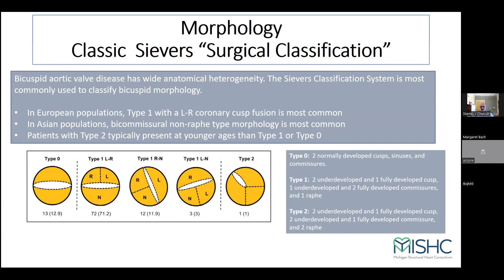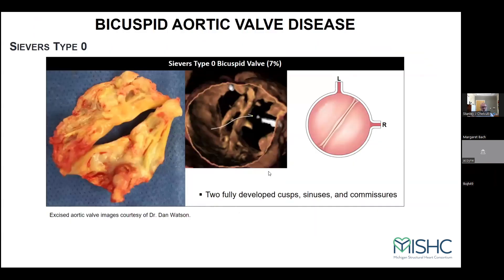We all talk about the CBUS classification. The preponderance in the European population is type 1. For type 0, you have two cusps and there's symmetry — this is more like the fisheye, or for Lord of the Rings fans, the eye of Mordor. In CBUS type 1, you tend to have two underdeveloped cusps with one fully developed cusp, and one underdeveloped and two fully developed commissures — the cusps and commissures just flip over each other. In type 2, which we rarely see, you have two underdeveloped and one fully developed cusp, and you have two raffae.